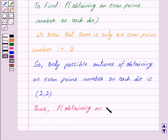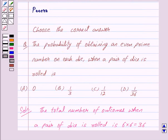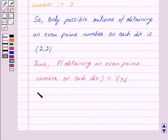...is equal to 1 upon 36, because there is only one outcome out of the 36 outcomes which satisfies this condition, which is our option D. So the correct answer is D.